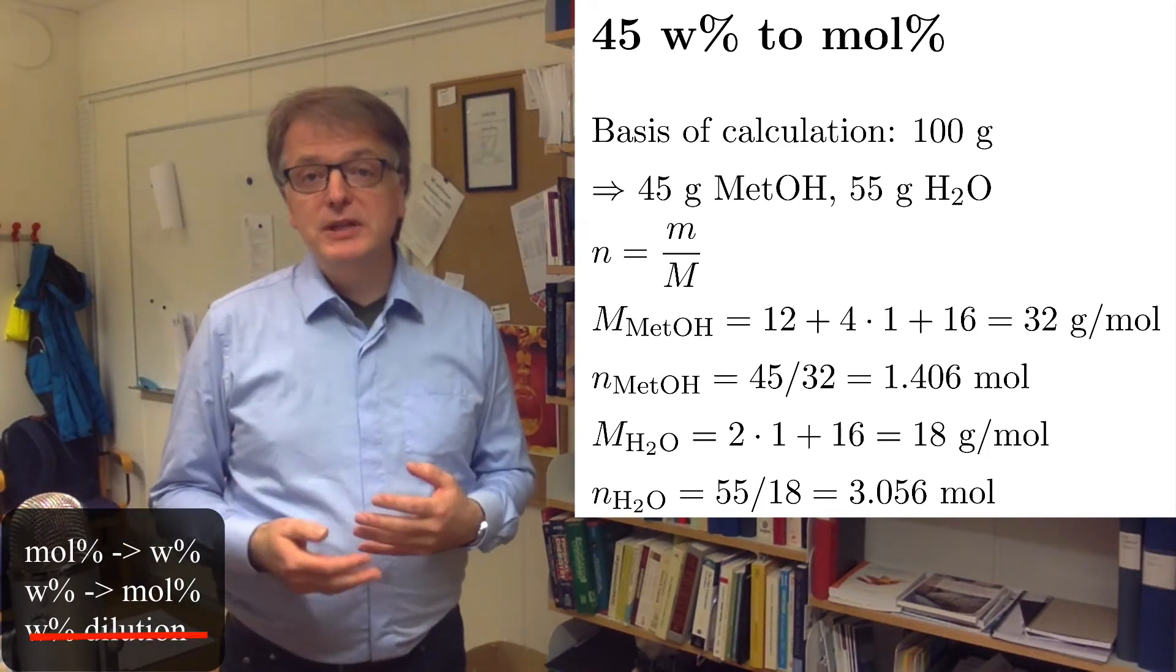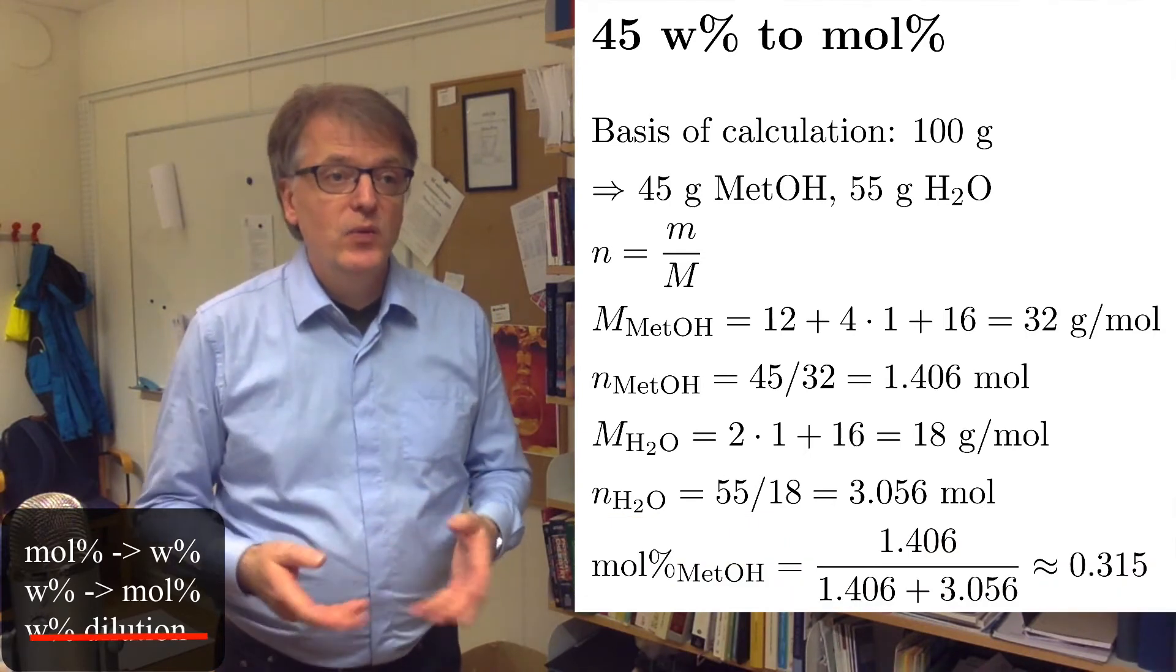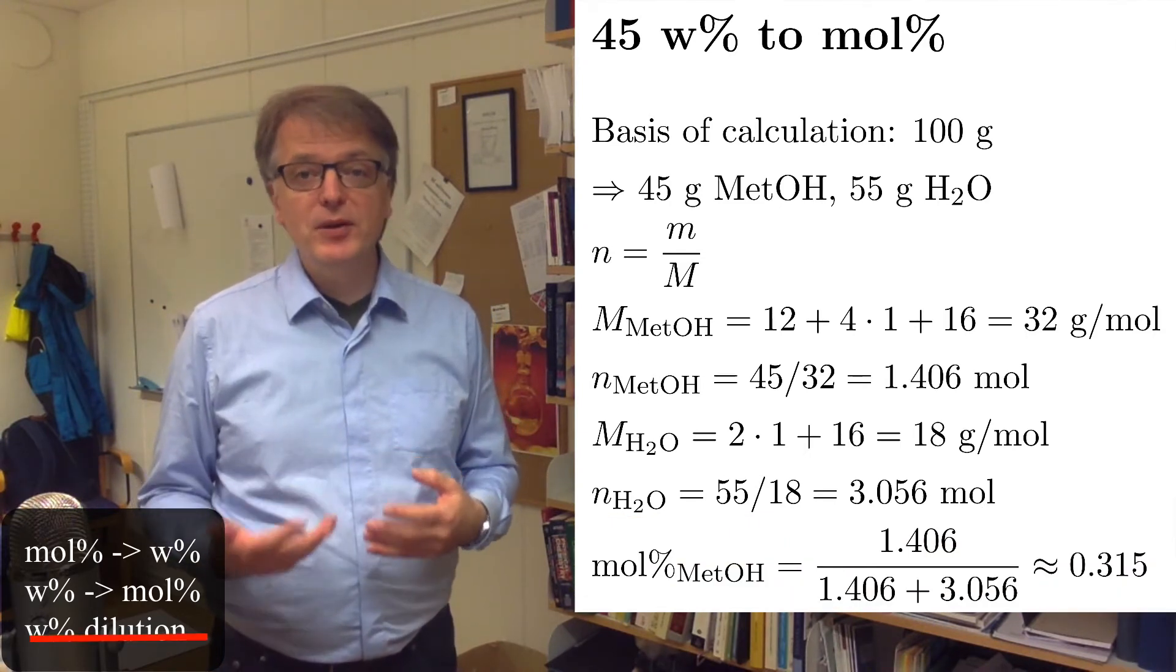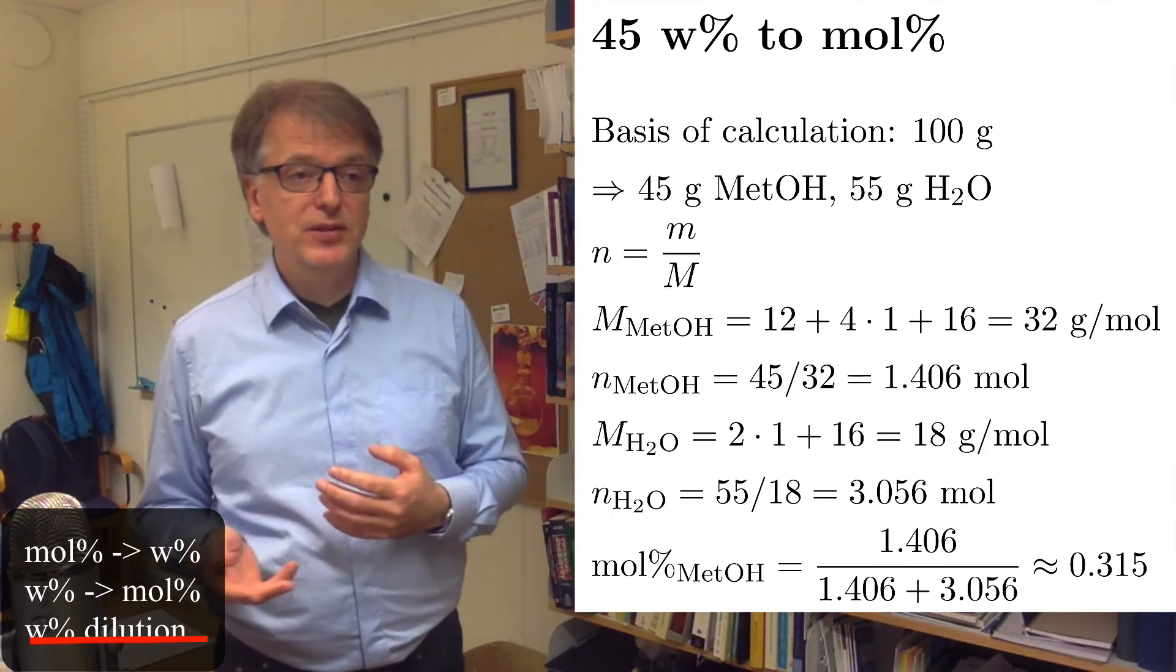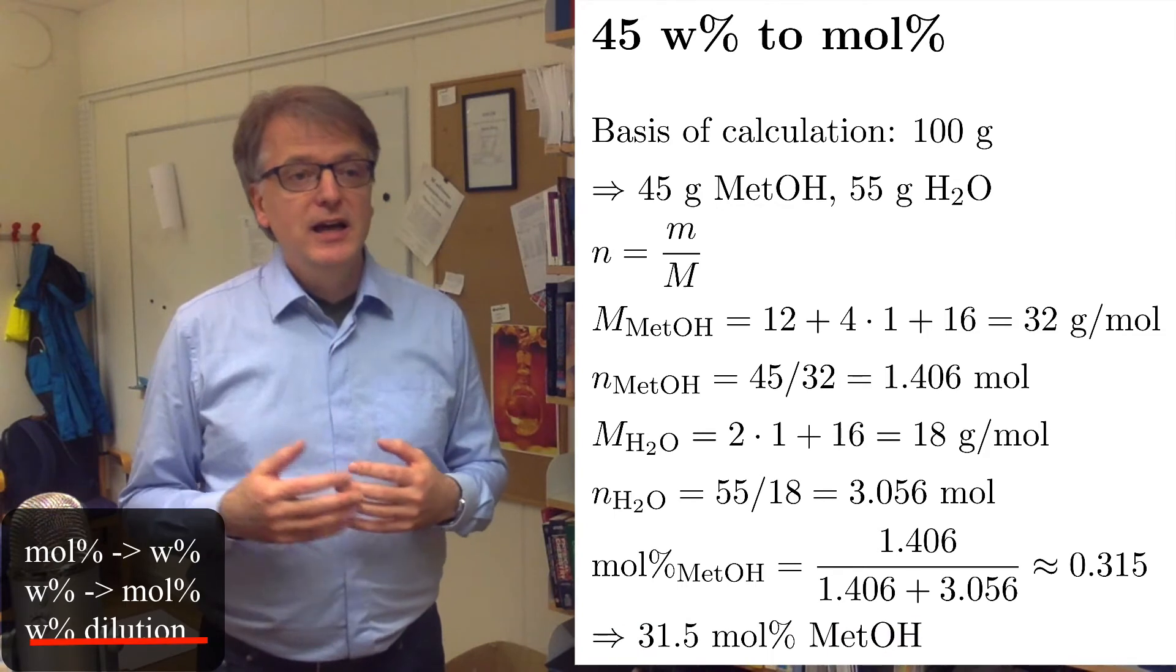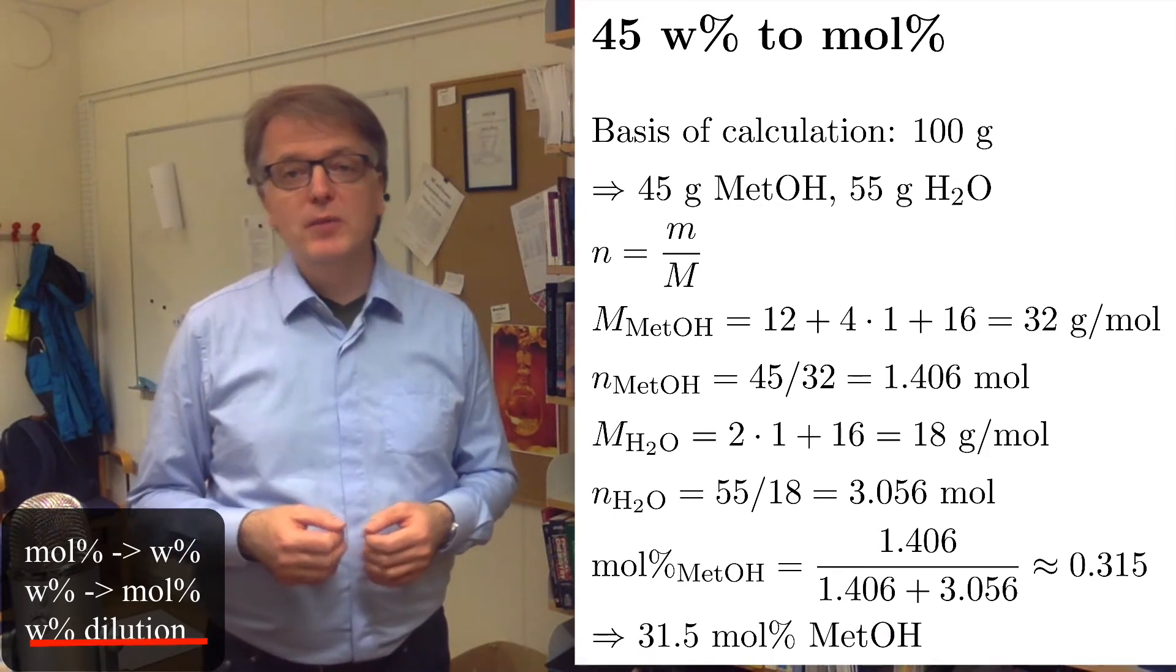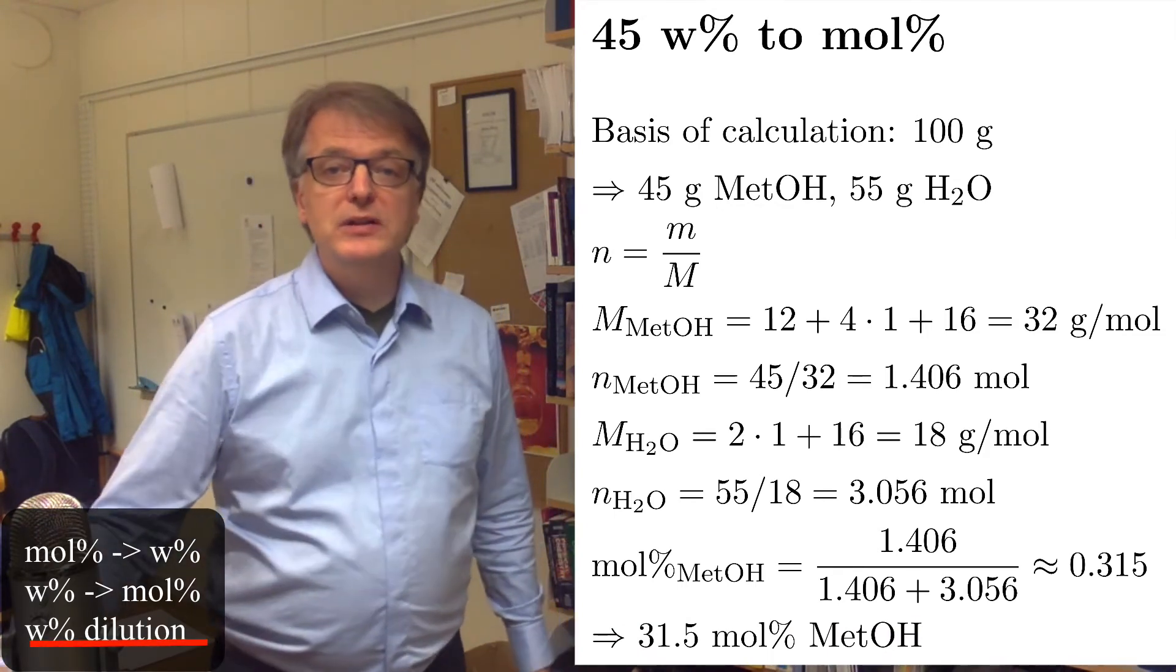So, the mole percent of methanol is then 1.406 moles of methanol divided by the total number of moles. That's 1.406 plus 3.056, and we get approximately 31.5 mole percent of methanol.